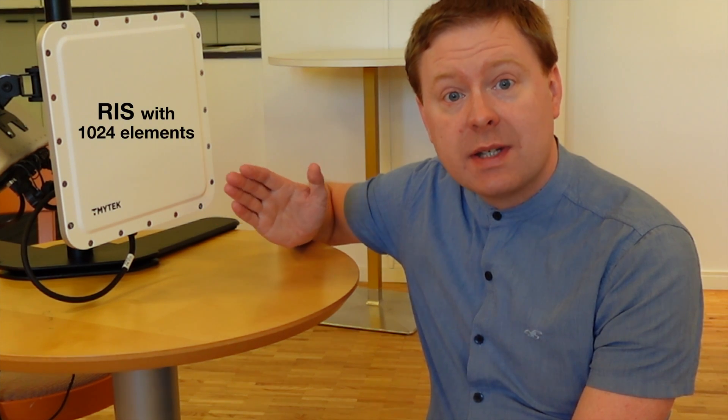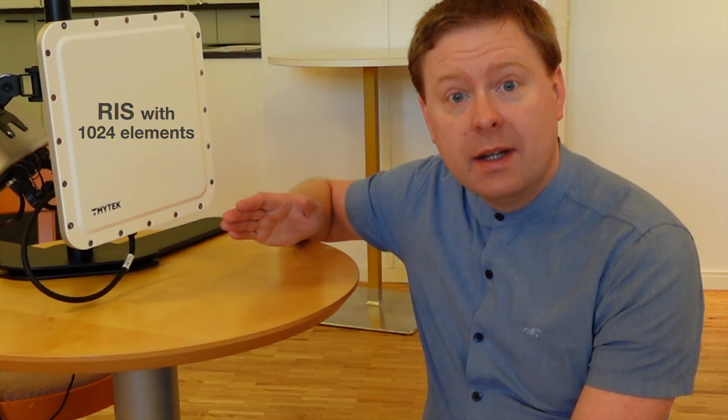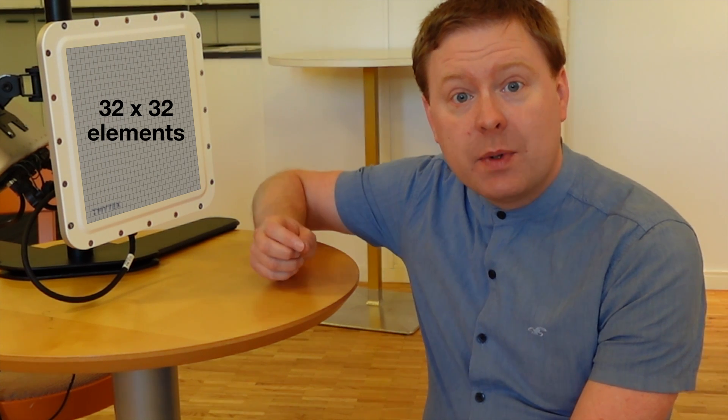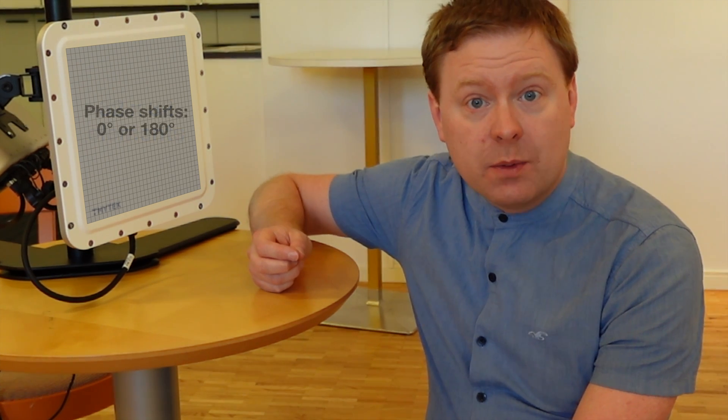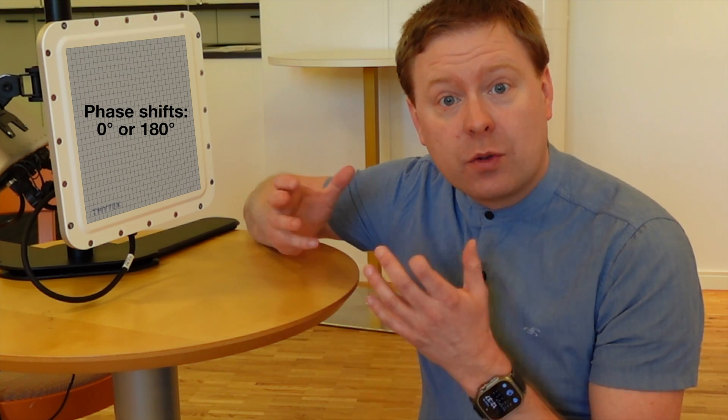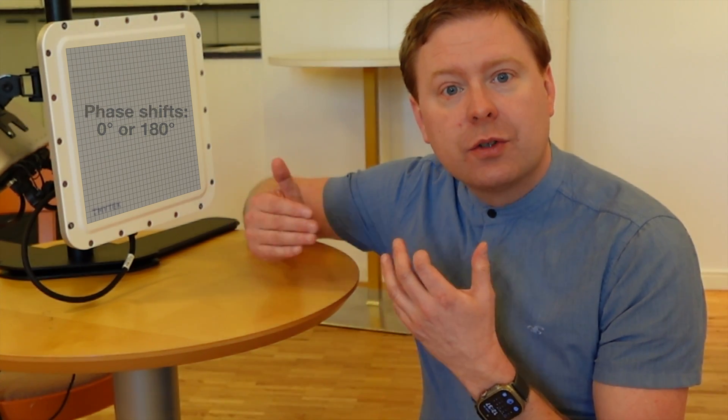This millimeter wave RIS consists of 1024 elements that we can configure individually. They are arranged 32 by 32. For each element we can select a phase that is either 0 or 180 degrees when we reflect the signal. By controlling them and selecting the right pattern, we can make the reflected signals go in the direction that we want it to go.